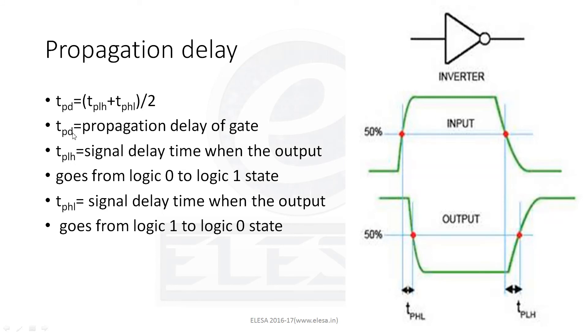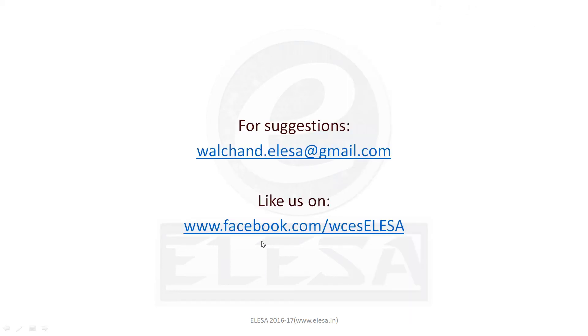In this formula, TPD is the propagation delay of gate. TPLH is the signal delay time when the output goes from logic 0 to logic 1 state. And TPHL is the signal delay when the output goes from logic 1 to logic 0 state. So, it is all about logic gates and propagation delay.